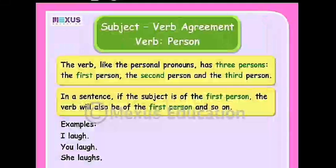Subject-verb agreement in person. The verb, like the personal pronouns, has three persons: the first person, the second person, and the third person. If the subject is first person, the verb will also be first person, and so on. Examples: 'I laugh / You laugh / She laughs.' 'I eat / You eat / She eats.' 'I cook / You cook / She cooks.' 'I go / You go / She goes.' The rule follows this pattern.